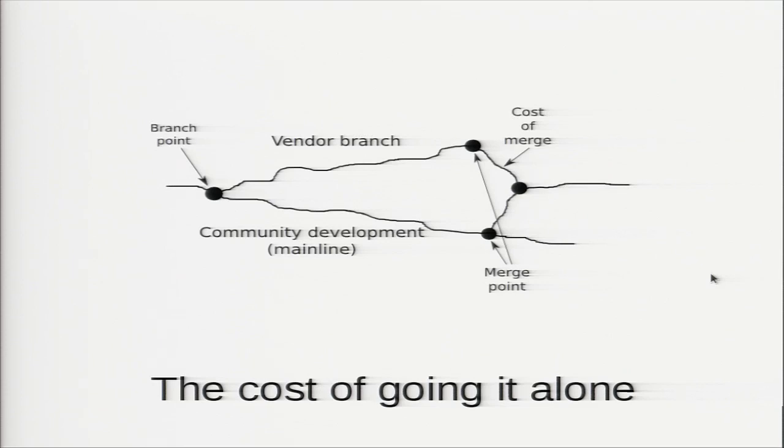When you want to attract contributors as an upstream, you need about 1,000 users to have maybe one potential contributor. So you need to do a lot of marketing to actually attract a contributor. And it poses problems when you don't attract enough contributors, when you cannot be an upstream, and you are forced to use other upstream projects. That's where Dave Neary's talk about the cost of going it alone comes into play—when a company takes an upstream project inside and forgets to contribute patches back.